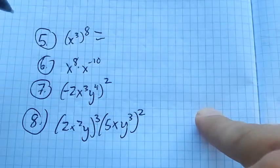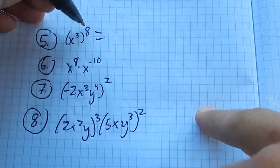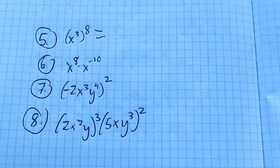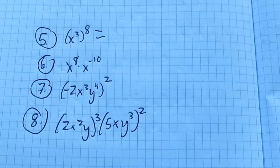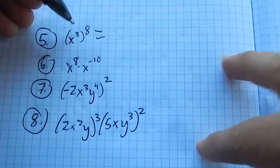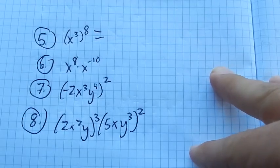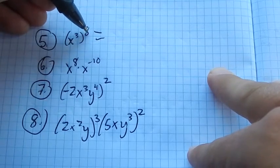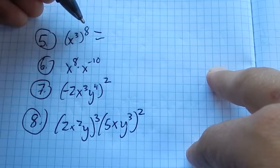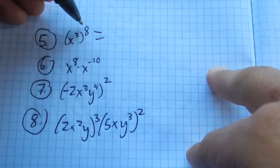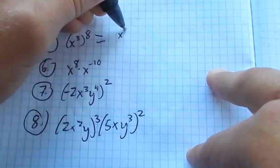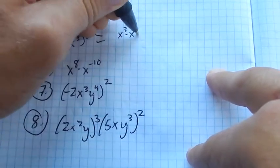So the first one, number 5, is x cubed to the 8th power. The directions say simplify, so that means do as much of the arithmetic as we can. Write all answers with positive exponents only, so I can't leave any negative exponents. So x cubed to the 8th power. I'm thinking about what to the 8th power means. There's a couple ways to do this. One of them is just to rationalize it. So x cubed to the 8th, this means this times itself 8 times. So that would be x cubed 8 times, all multiplied together.